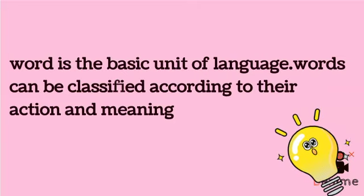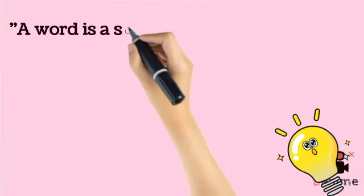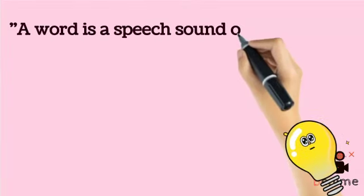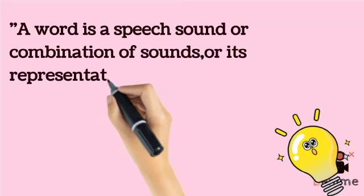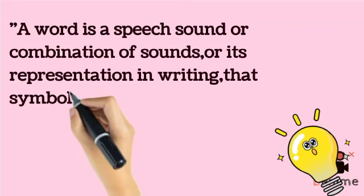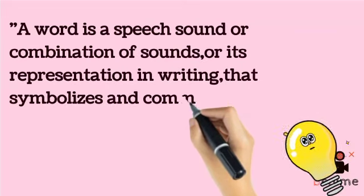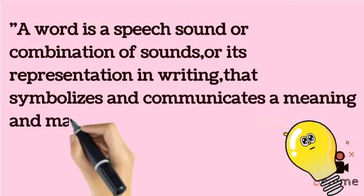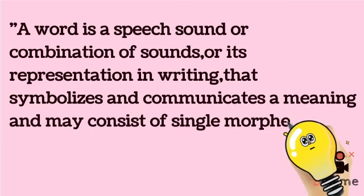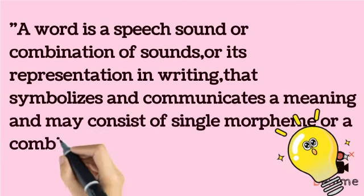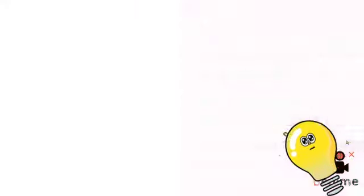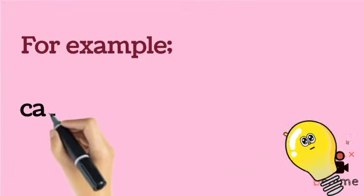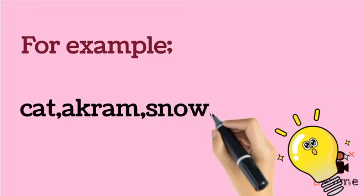Another definition of word is: a word is a speech sound or a combination of sounds, or its representation in writing, that symbolizes and communicates a meaning, and may consist of a single morpheme or a combination of morphemes. For example: cat, Akram, snow, Pakistan.